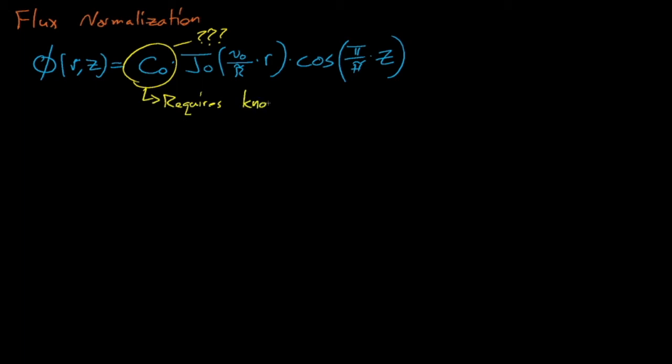We'll finish our lecture today by describing how to normalize the flux, which is another way of saying how to determine the constant C0 in our flux expression. So, what do we know about the flux and about our reactor, and what constraints can we impose on the flux? In theory, we should know at what power our reactor is operating, which means that we should know the total rate at which fissions occur inside of our reactor.